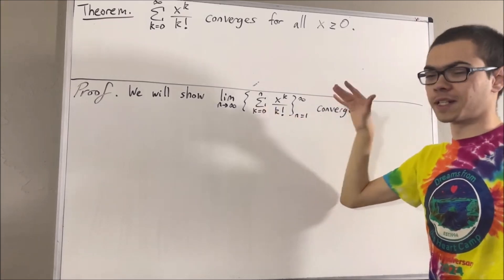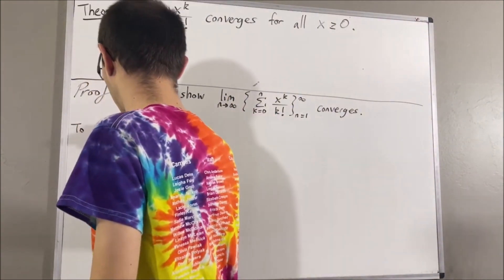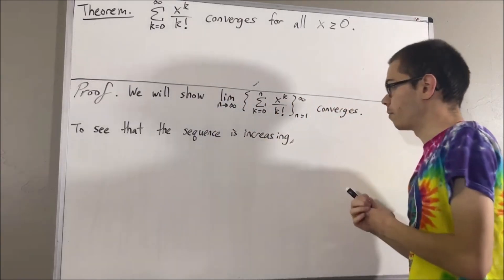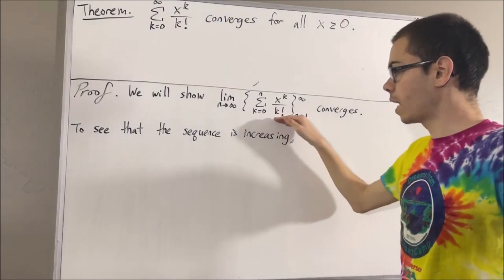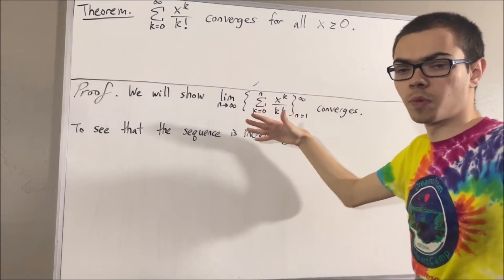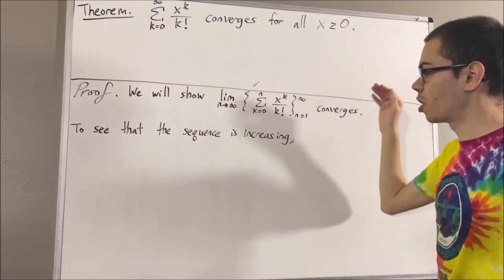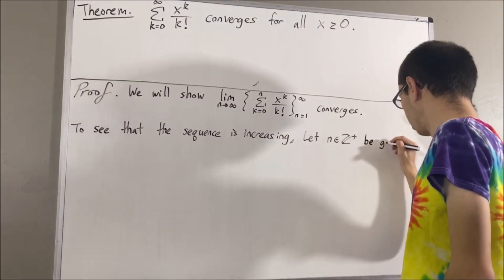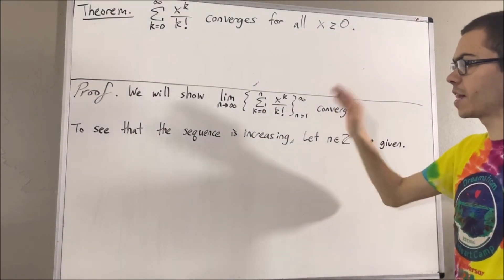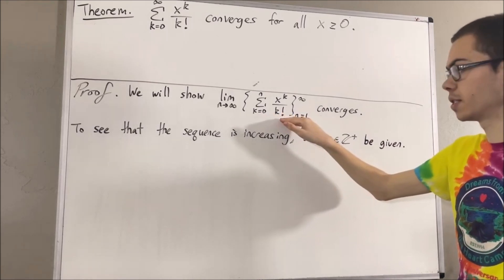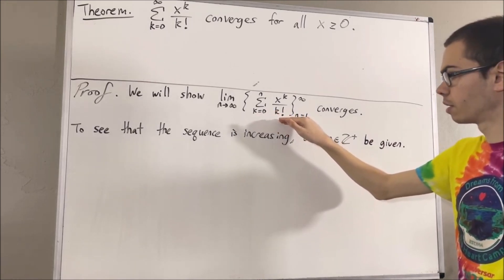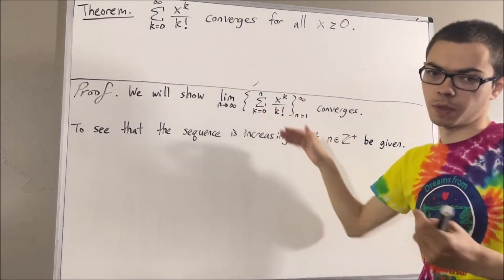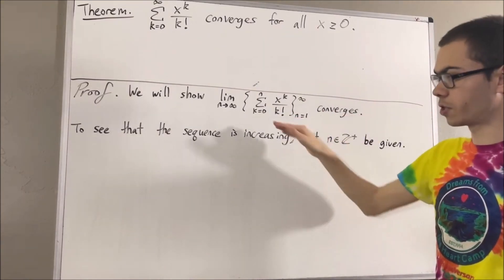Now, let's first show that this sequence is increasing. To show that the sequence is increasing, what that means is we want to show that every term of the sequence is less than or equal to the term that comes after it. So let's give ourselves an arbitrary positive integer n. From here, we want to show that the nth term of this sequence is less than or equal to the n plus 1th term of this sequence.